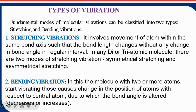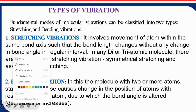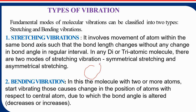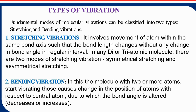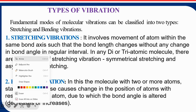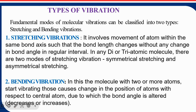Stretching vibration involves the movement of atoms within the same bond axis. If there is a central atom with side atoms bonded to it, they move along the same bond axis. In bending vibration, a molecule with two or more atoms vibrates such that the position of the atom changes with respect to the central atom — meaning only the bond angle changes while the bond length remains the same.